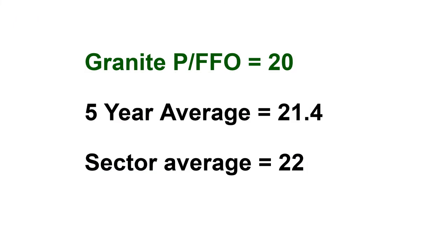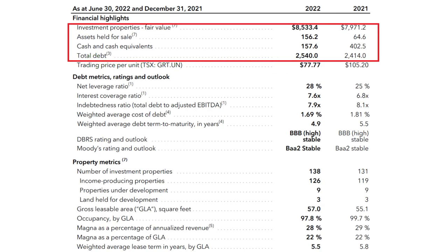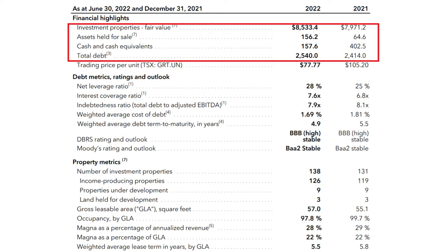Their price-to-FFO is currently close to 20, while their five-year average price-to-FFO is close to 21.4 and their sector average is 22. It seems Granite right now has a relatively good valuation in terms of FFO. Moving to the second indicator, Granite REIT has a net asset value of approximately 5.3 billion Canadian dollars — total assets minus total liabilities — while their market cap is close to 5.11 billion, which means it is almost fairly valued in terms of net asset value.